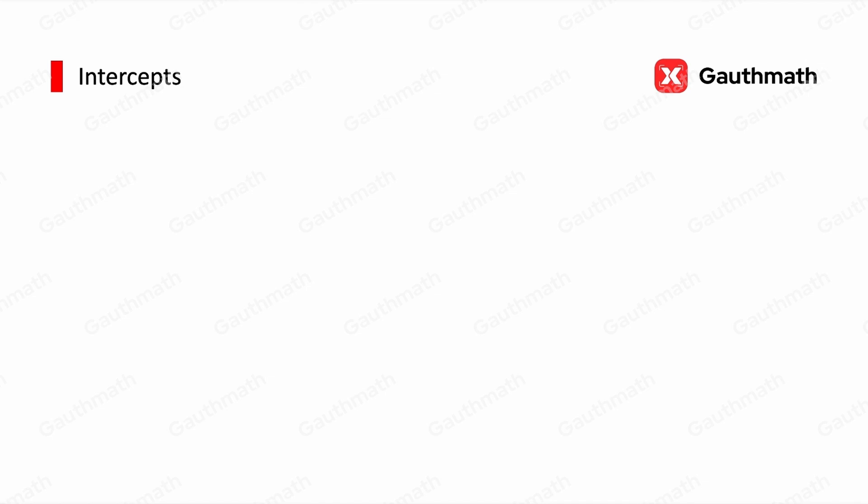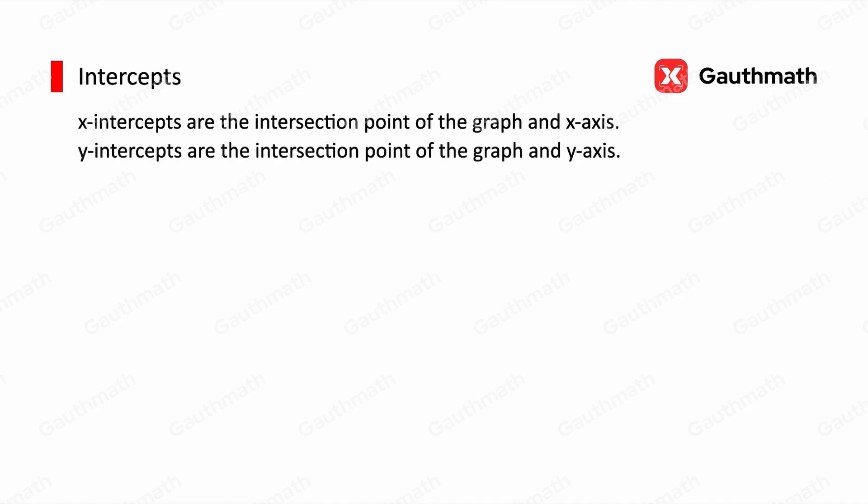Let's move on to intercepts. X-intercepts are the intersection points of the graph and the x-axis, and y-intercepts are the intersection points of the graph and the y-axis. To find x-intercepts, we set f(x) = 0 and solve the equation.